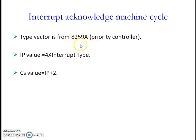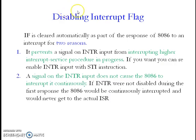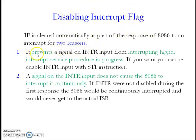With the help of CLI and STI you can disable the interrupt flag. The first reason for disabling the interrupt flag is that it prevents the signal on the INTR input from interrupting the highest interrupt service procedure in progress. If you don't want any other interrupt to interrupt the highest interrupt service procedure, you can disable the interrupt flag.